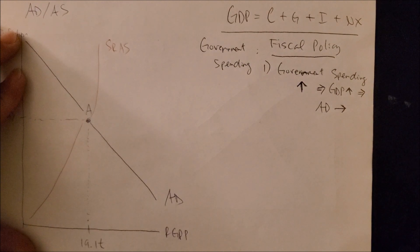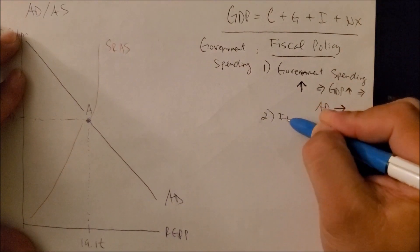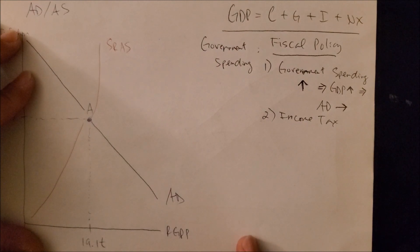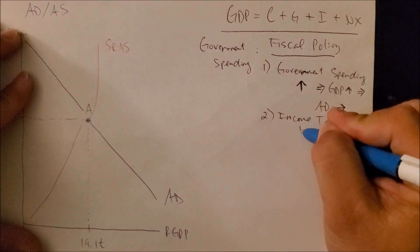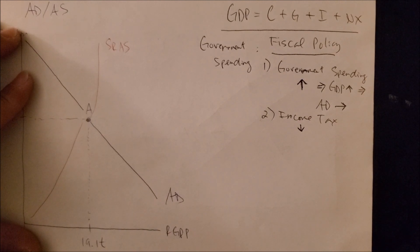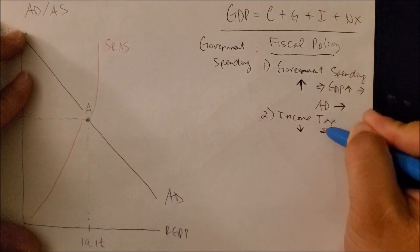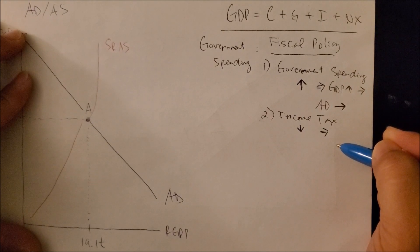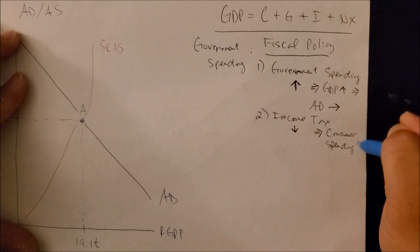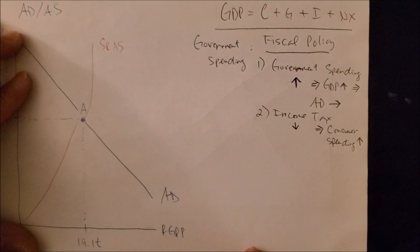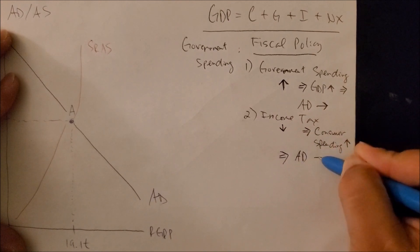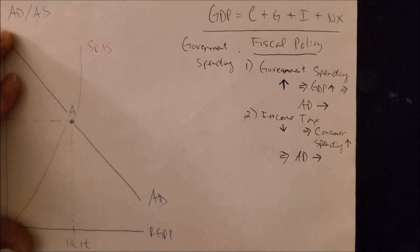A second fiscal policy tool Congress has is the income tax. For expansionary fiscal policy, Congress could cut income taxes — reducing income tax for all Americans. When Congress decreases income tax, consumers have more money every two weeks or every month to spend on goods and services. Consumer spending increases, and as a result the AD shifts to the right.